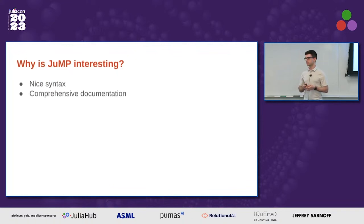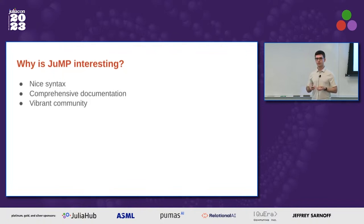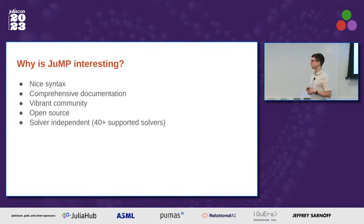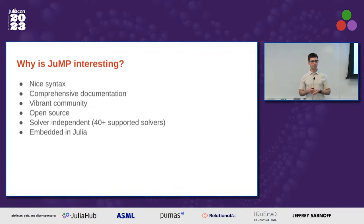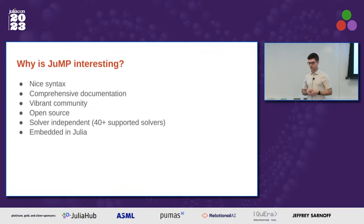Comprehensive documentation — we've been working on this pretty hard for the past couple of years and we're pretty proud of it, though there's always room for improvement. The community, as evidenced by this workshop today and all the discussions that happen online. JuMP is open source, so you can use it however you like following the license. It's solver-independent — we now list more than 40 solvers you can connect to. It's embedded in Julia, so when you're solving an optimization problem, you might solve a lot of them in a loop, do data processing, or other logic — being in a fully-featured programming language like Julia is very convenient.